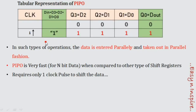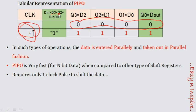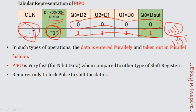This is the tabular representation of the parallel input parallel output shift register. Before applying the clock pulse, the default outputs are all zeros. After applying the first clock pulse, D3, D2, D1, D0 are all one applied parallelly, and the outputs Q3, Q2, Q1, Q0 are also one one one one in parallel.